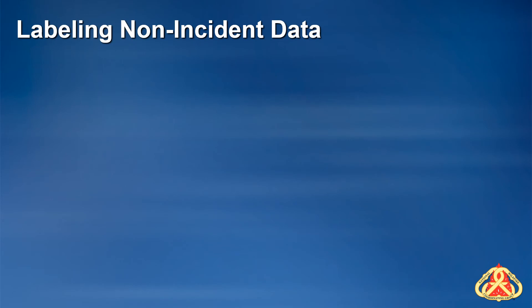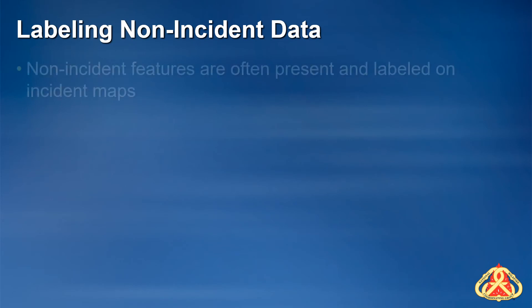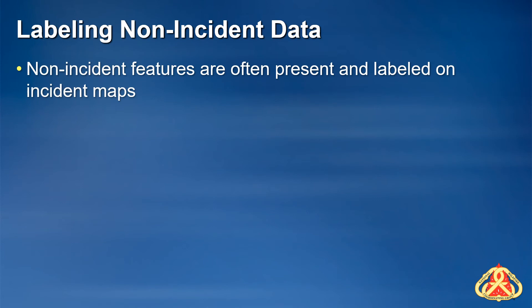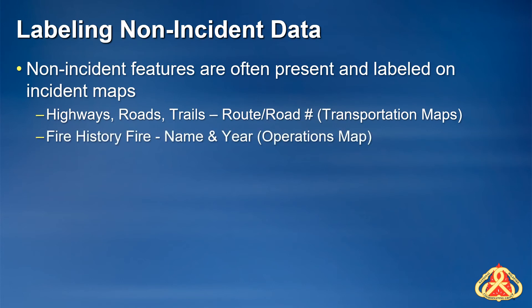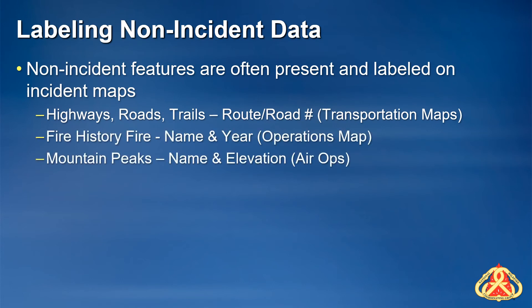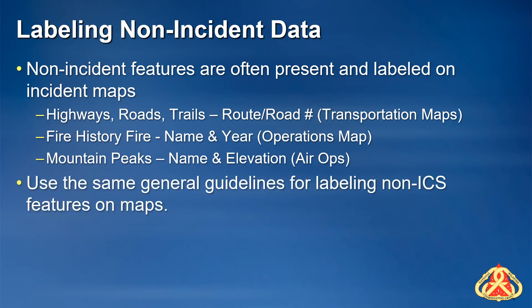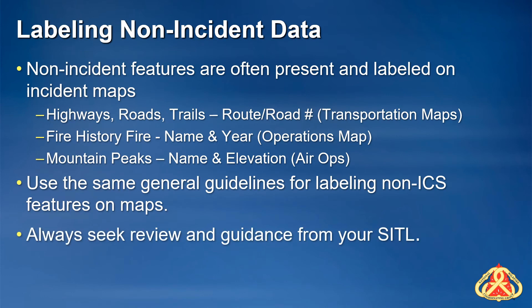In many instances, you will be asked to add labeled non-incident features to your map products. For example, you may be asked to add labeled roads to a transportation map, fire history data to an operations map, or mountain peaks with elevations to an air ops map. Follow the same general guidelines for labeling non-incident features as you would for labeling incident features. Avoid obscuring or interfering with incident features and labels when labeling non-incident data, and always seek review and guidance from your fellow GISS and SIDL.